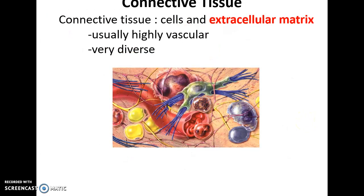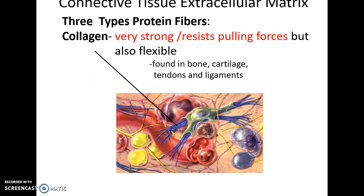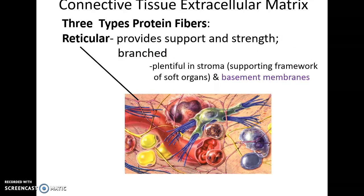Connective tissues are very diverse, have cells and extracellular material, and are usually vascularized. The extracellular matrix includes the ground substance — the filler material between the cells and the fibers — which can be solid, gelatinous, or fluid, and can support cells and provide a medium of exchange. Protein fibers found in most connective tissue can be collagen fibers, which are very strong and flexible; elastic fibers made of elastin, which can stretch and return to their original shape; and reticular fibers, which are very branched and provide a framework for filtering materials.